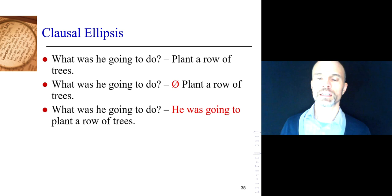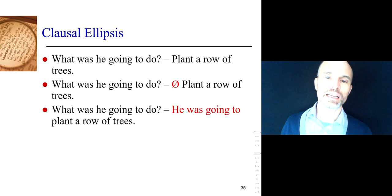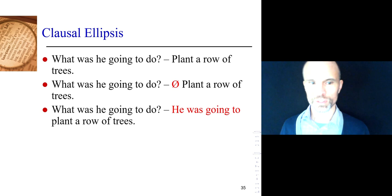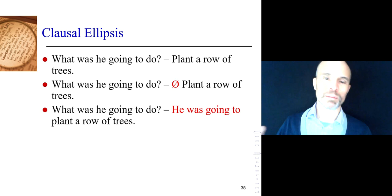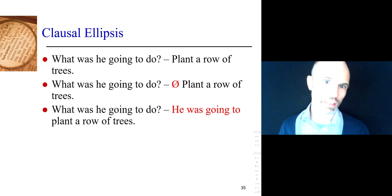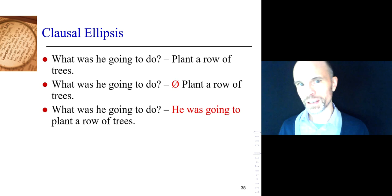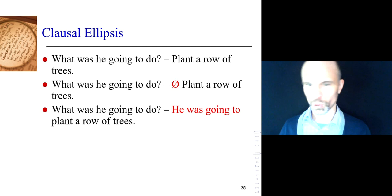Clausal ellipsis: more than the verb — the subject and the verb are both omitted. 'What was he going to do? Plant a row of trees.' In the second sentence, all that the person said was 'plant a row of trees,' but they expect the listener to anaphorically presuppose 'he was going to' from the first sentence. So: verbal ellipsis is just the verb or part of the verb; clausal ellipsis means the subject and the verb — or at least part of the verb — are both missing.